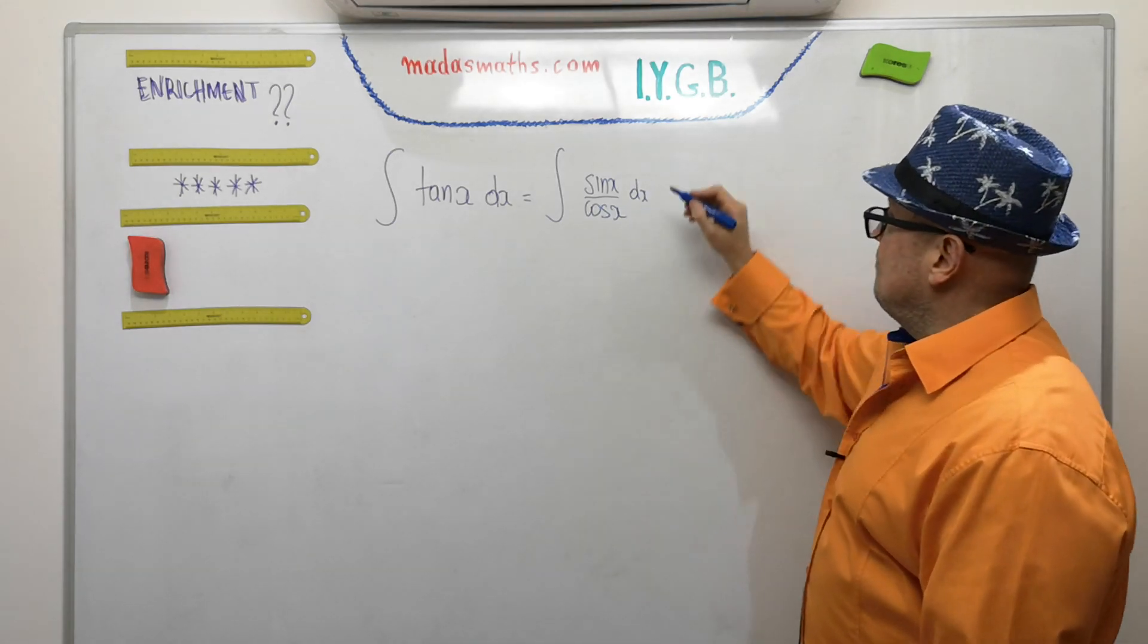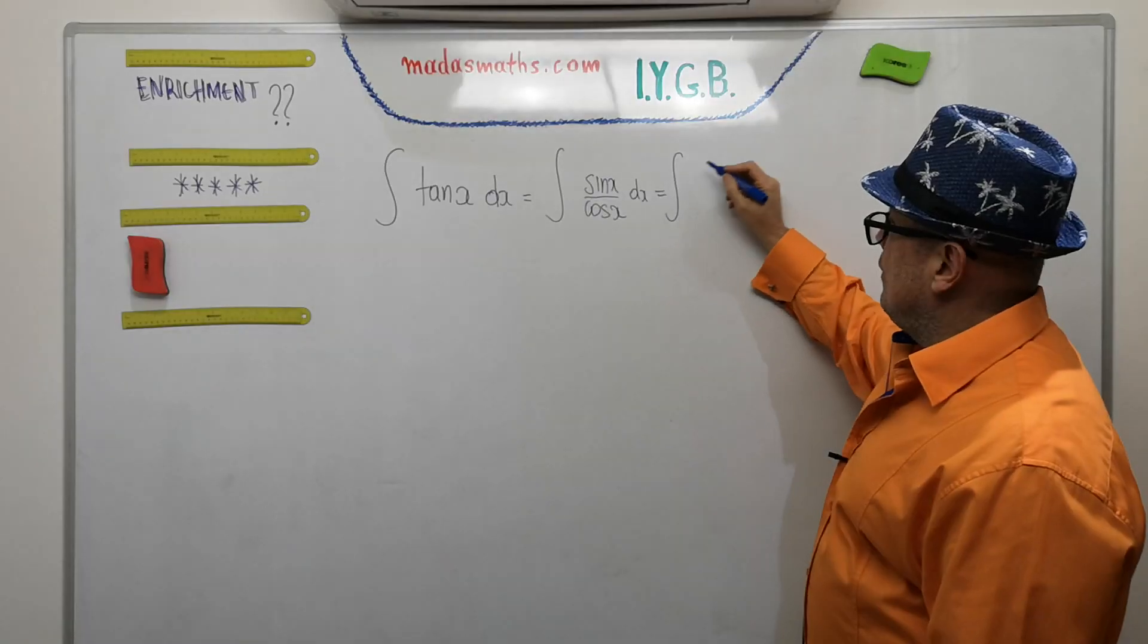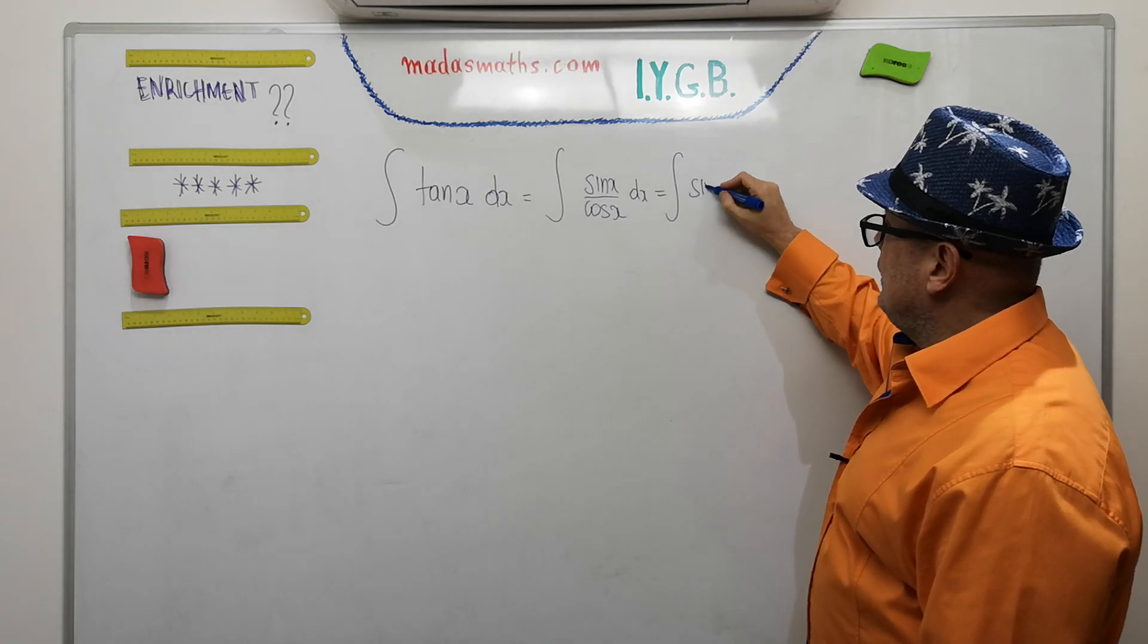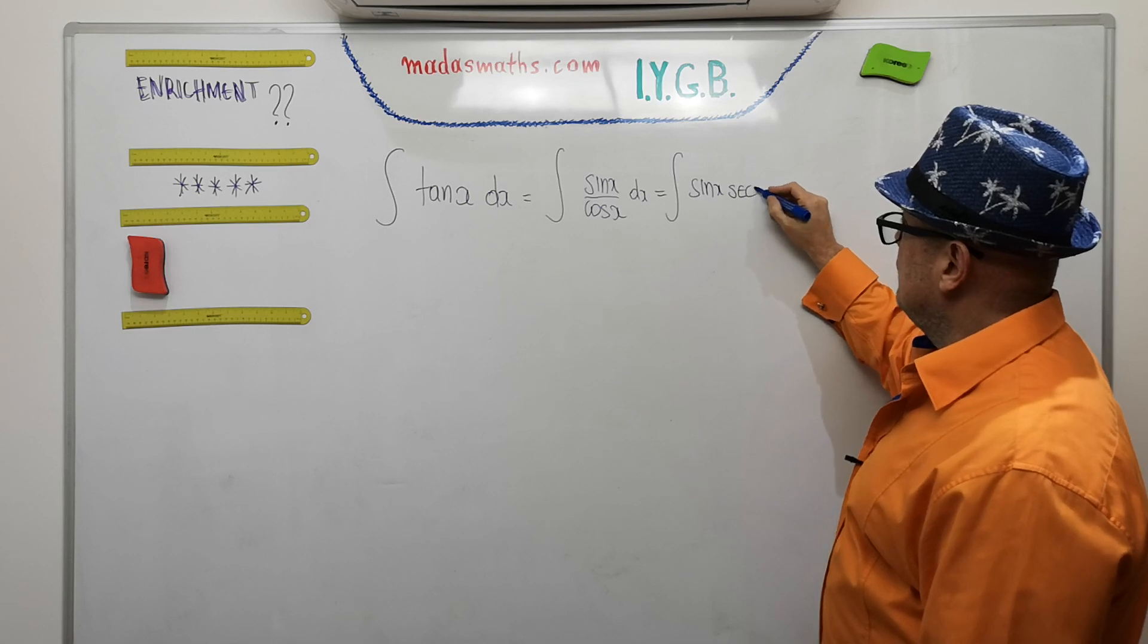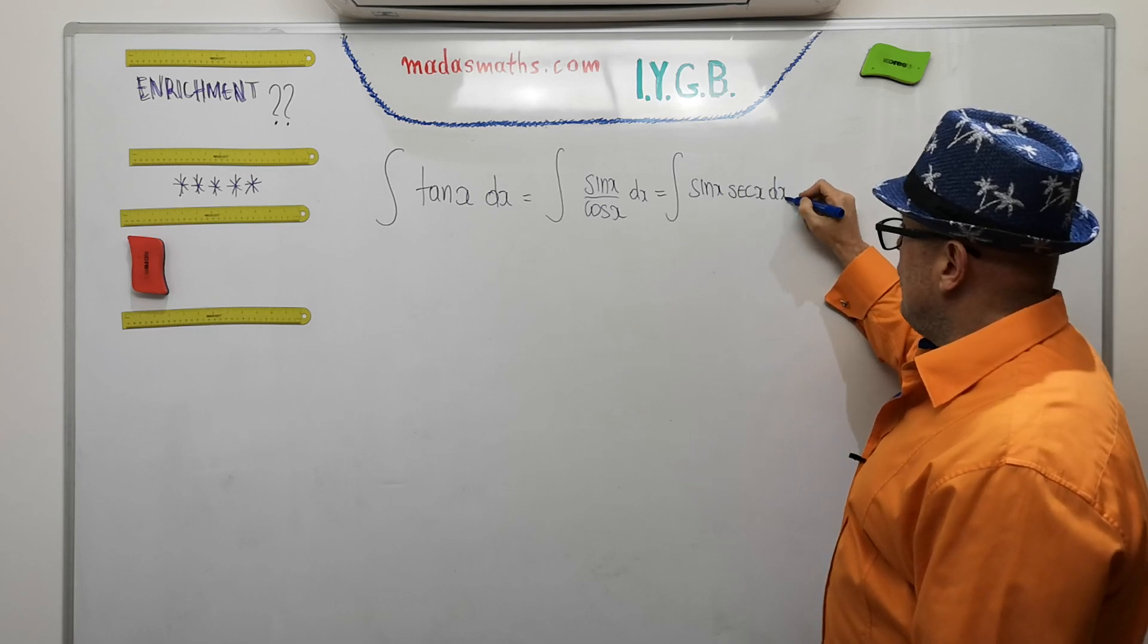And then I'm going to rewrite it as the sine of x, and I'm gonna write this cos to the top as a sec of x. No problem so far either.